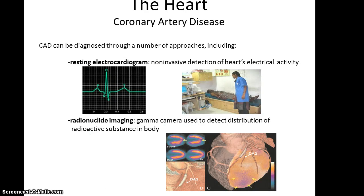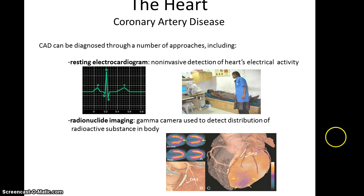Coronary artery disease can be detected ahead of time through non-invasive approaches, such as a resting electrocardiogram, where they look at the heart's electrical output from that natural pacemaker. It can also be examined through radionucleotide imaging, in which a gamma camera detects the distribution of a radioactive substance in the heart. If there's an area not receiving that radioactive substance, blood flow must not be reaching that part of the heart due to a blockage.